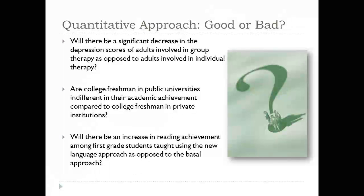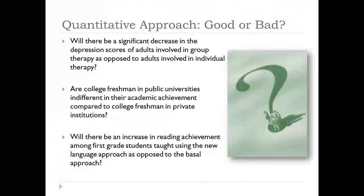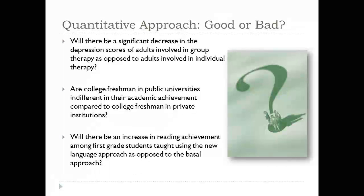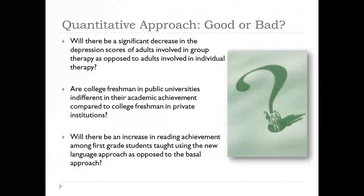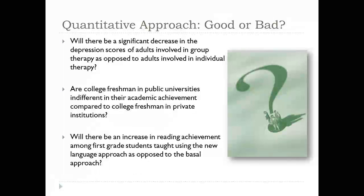The next question is: 'Are college freshmen in public universities indifferent in their academic achievement compared to college freshmen in private institutions?' Are the variables well defined here? No — what is 'indifference,' and what is 'academic achievement'? Are we looking at math grades? How do you measure indifference? There are concerns about the dependent variable not being specific enough.